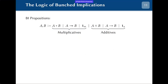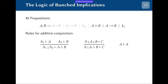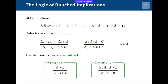PyBI adds expressiveness by means of the additives. The additives have conjunction, implication, and truth, and the rules look exactly the same — with the twist that for them, weakening and contraction are now admitted as available principles. I'm marking the additive judgments with a semicolon instead of a comma to emphasize that these are the judgments for which these principles are available.